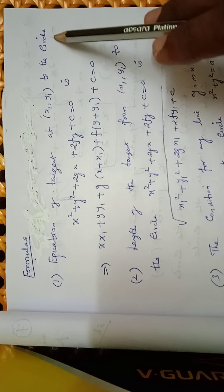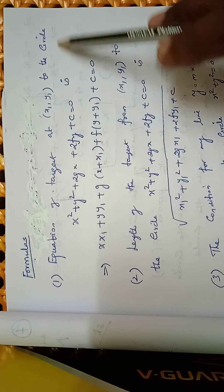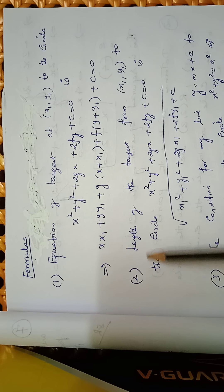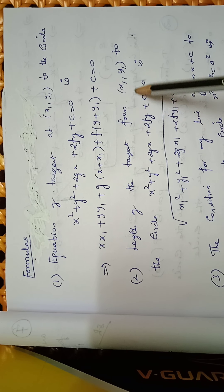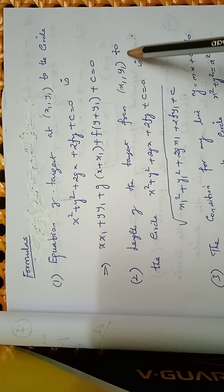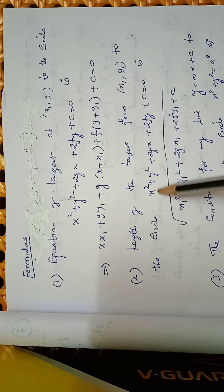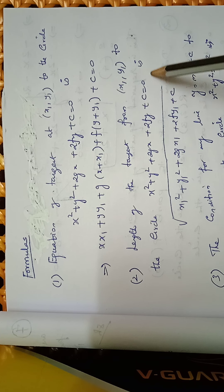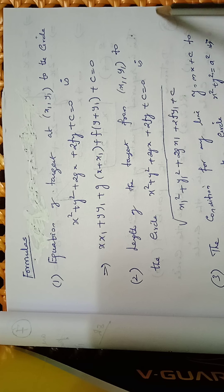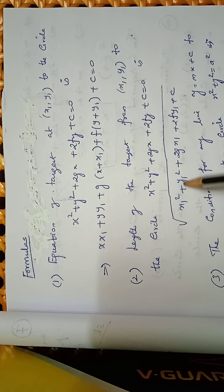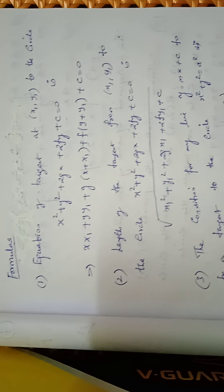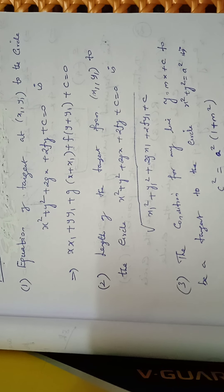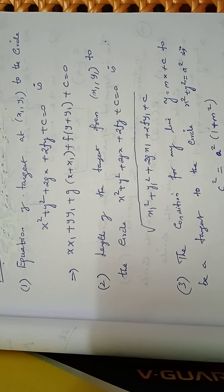Second formula: the length of the tangent from (x1, y1) to the circle x² + y² + 2gx + 2fy + c = 0 is the square root of x1² + y1² + 2gx1 + 2fy1 + c.